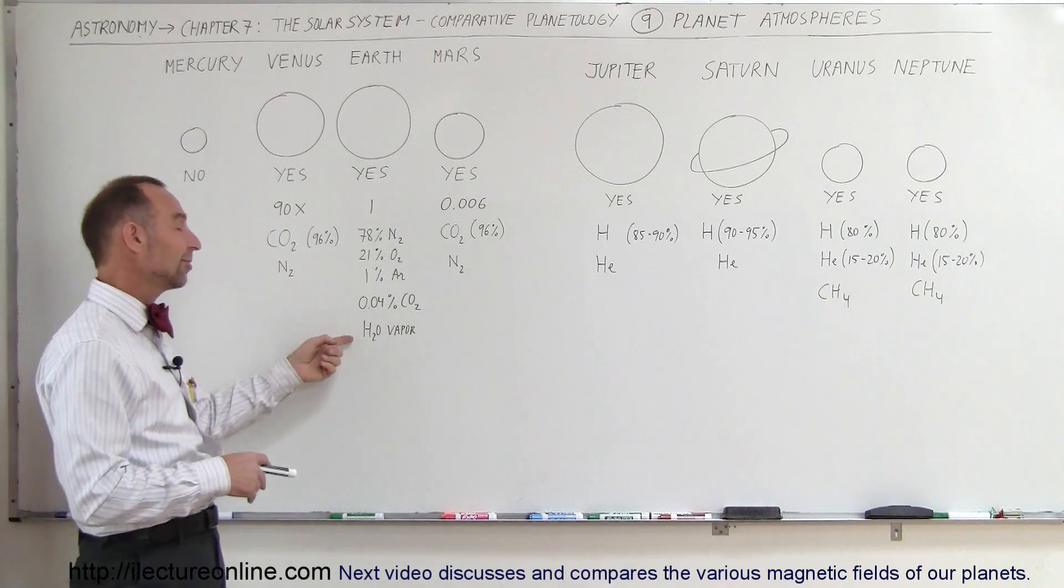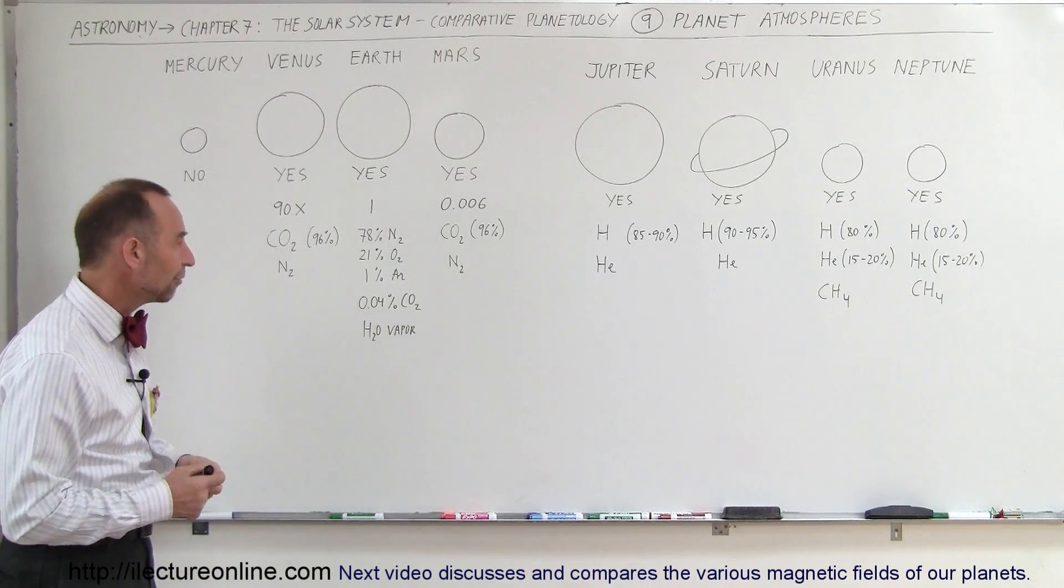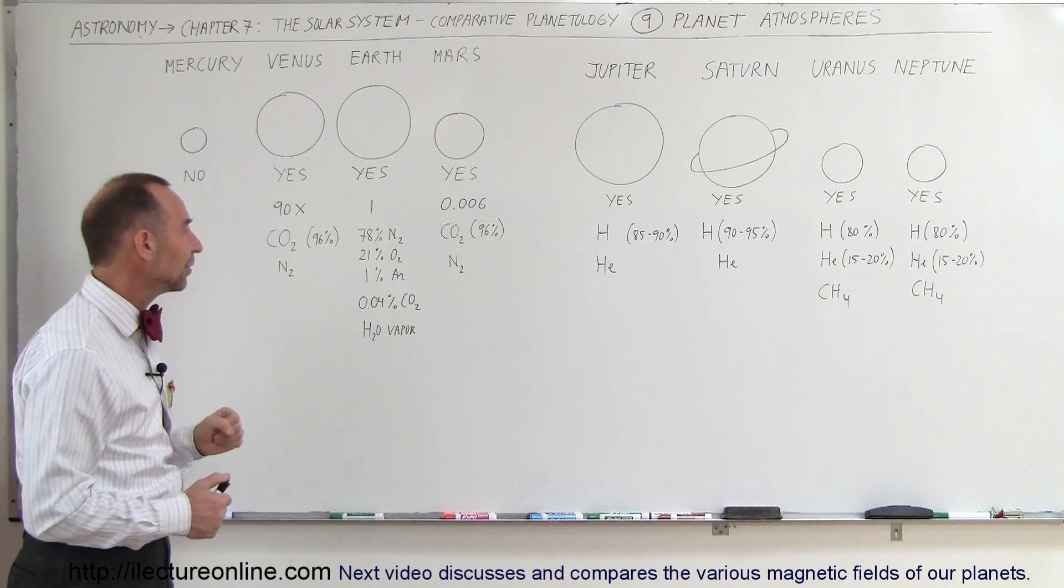Water vapor depends upon where on Earth you are. Over desert regions, there's less. Over tropical regions with oceans, you'll find more water vapor. You see, it's very different in consistency there.